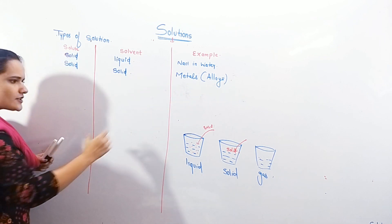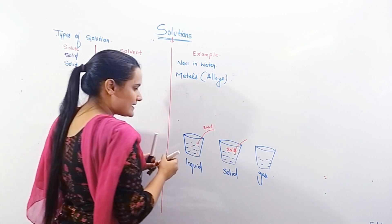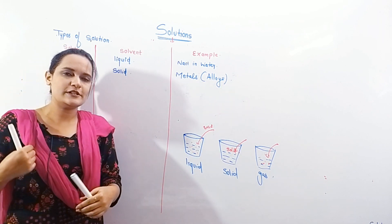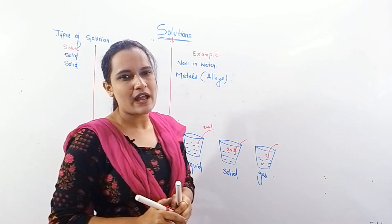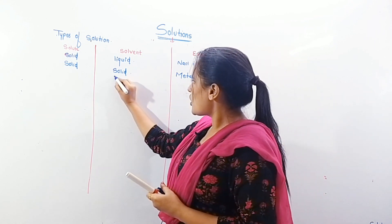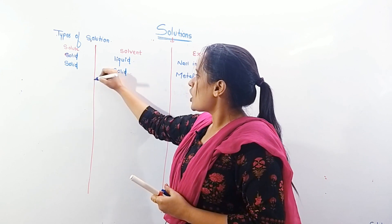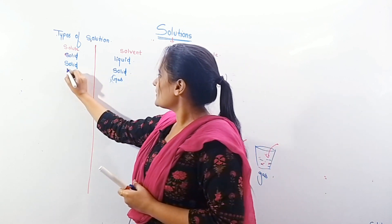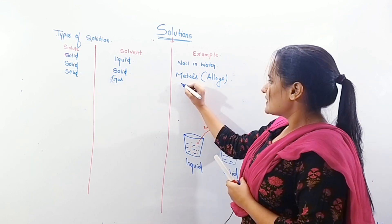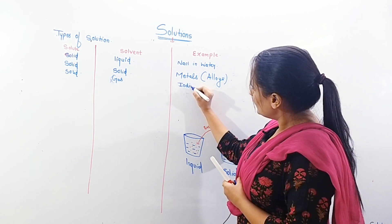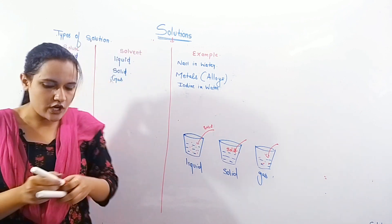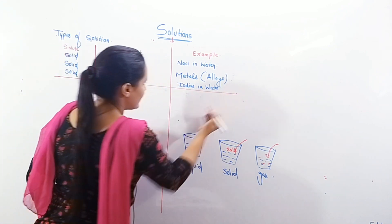Next, our solvent is gas and we add a solid into it. Iodine is in solid state and air is in gaseous state — so iodine in air is an example of solid in gas. So we have now seen three types with solid as solute: solid in liquid, solid in solid, and solid in gas.